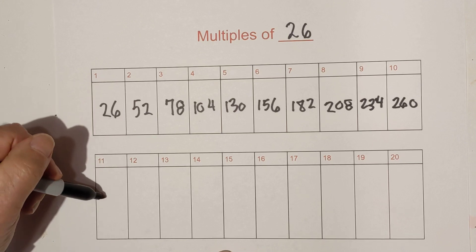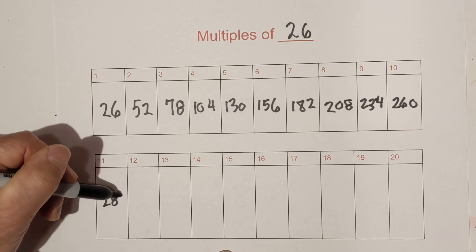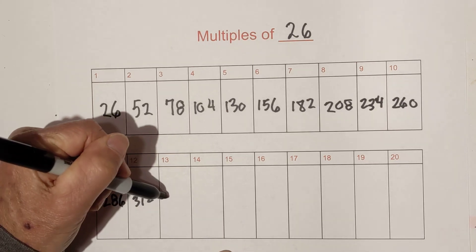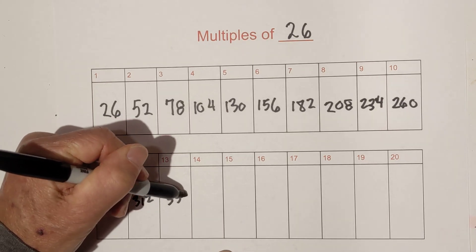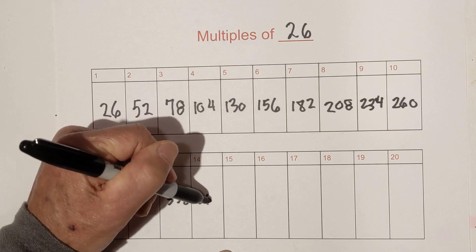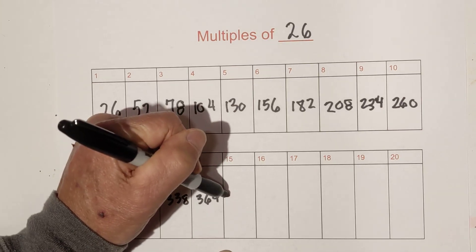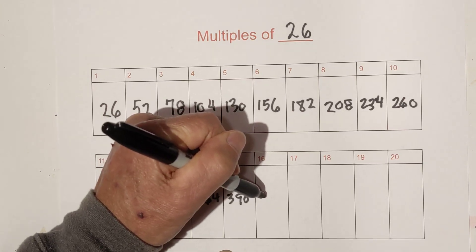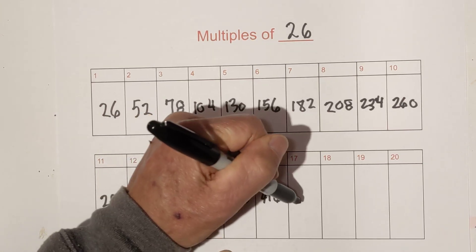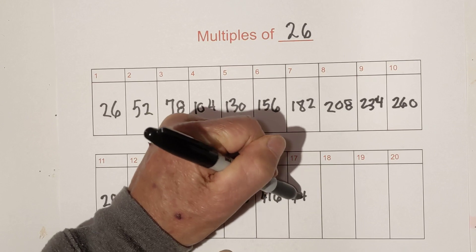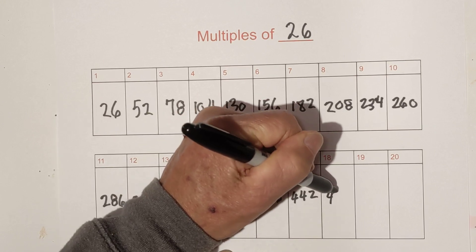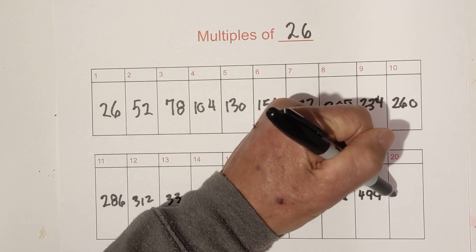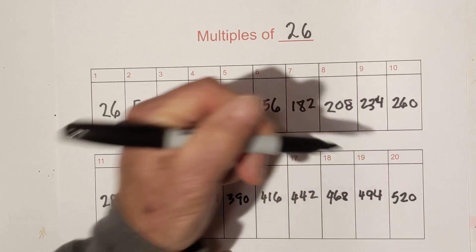Now let's move down to 11, we have 286, 312, 338, 364, 390, then times 16 is 416, 442, 468, 494, and then finally times 20 is 520.